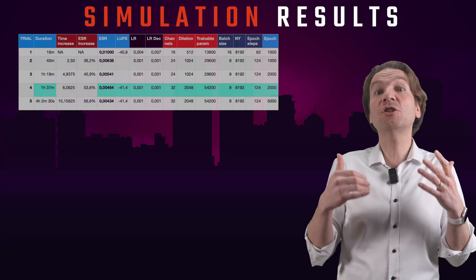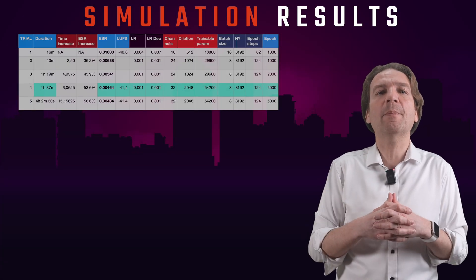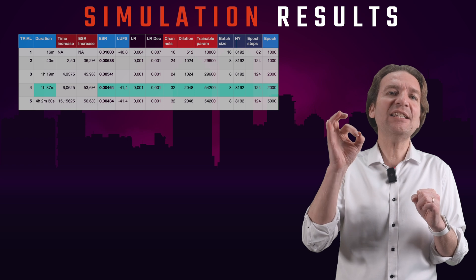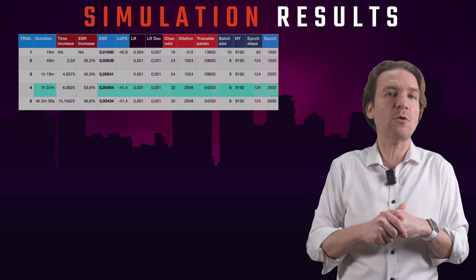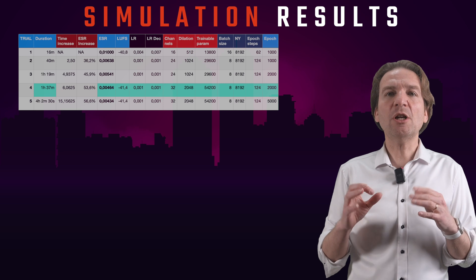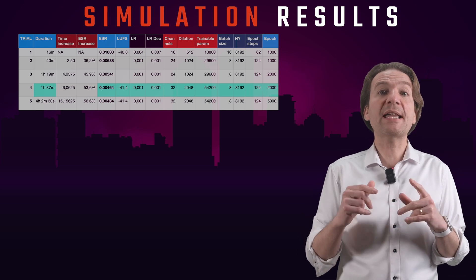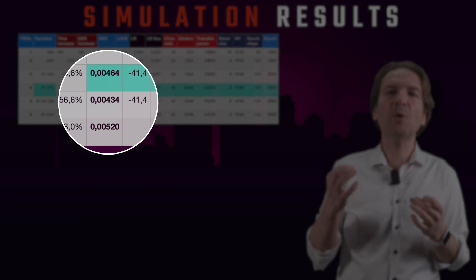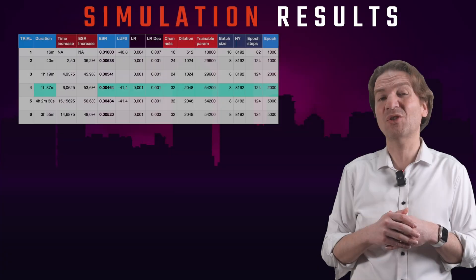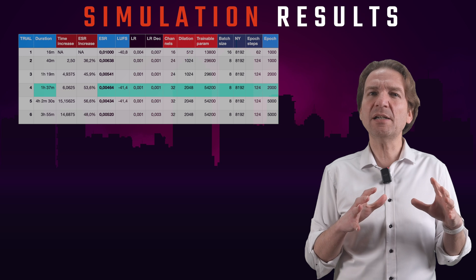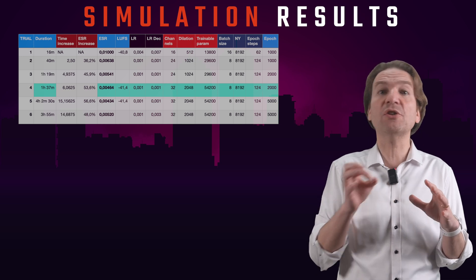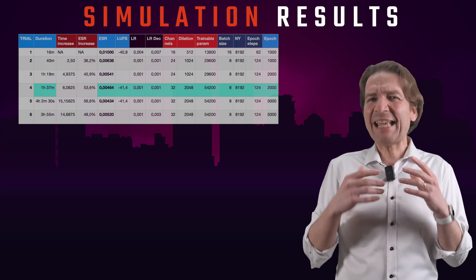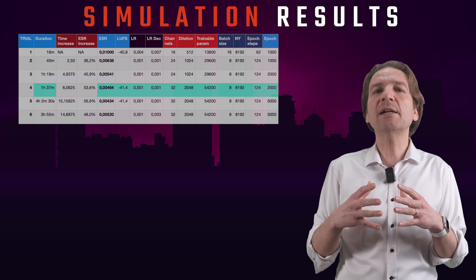Let's slightly change our training rate now, setting the decay to 0.003 with our trial number 6, where I reached an ESR of 0.00520. So it seems that the best learning rate and decay are 0.001.